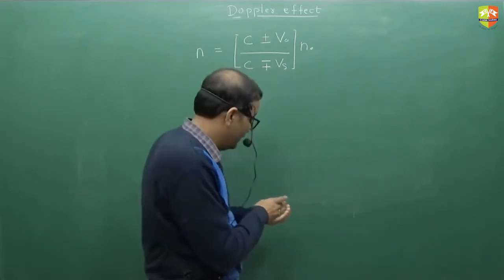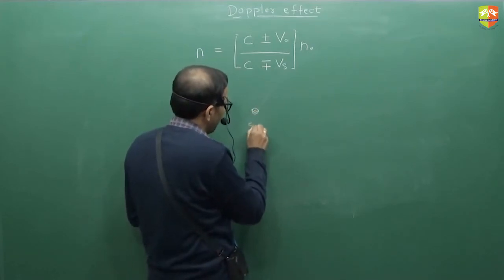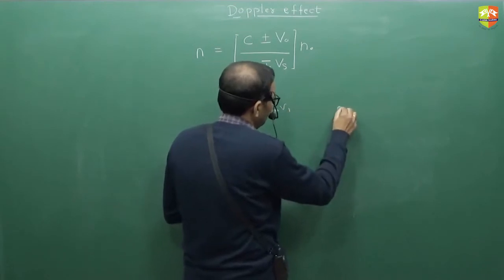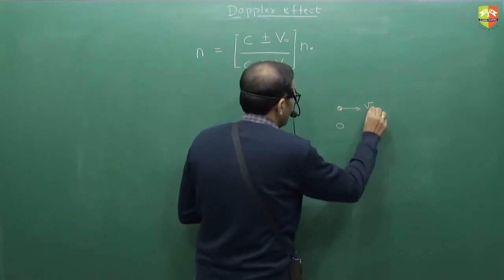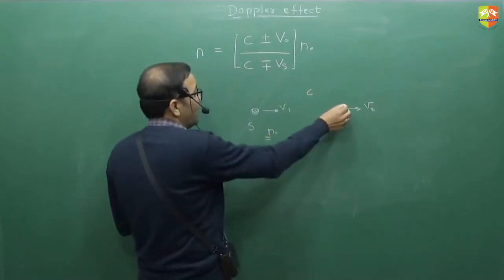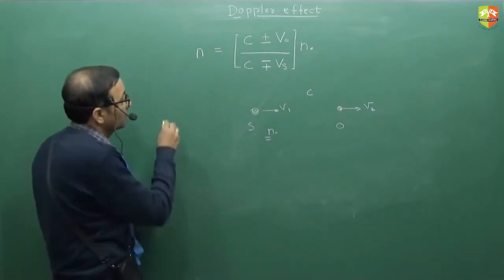It might happen that one is approaching, other is going away. For example, this is source going with v1 velocity. This is observer going with velocity v2. Speed of sound is c, original frequency n0.